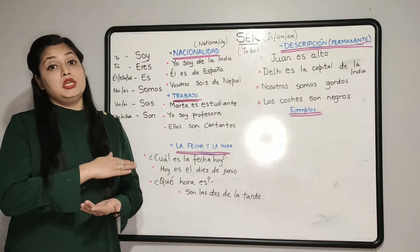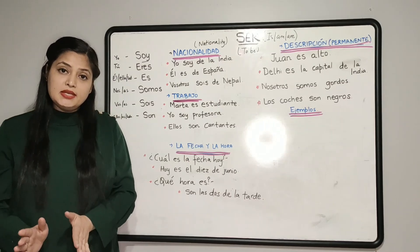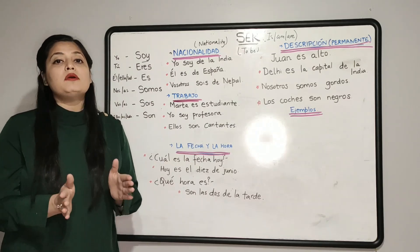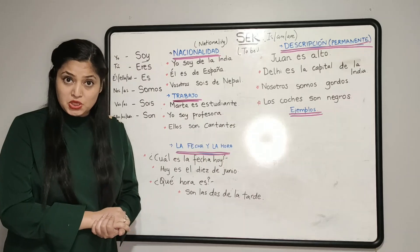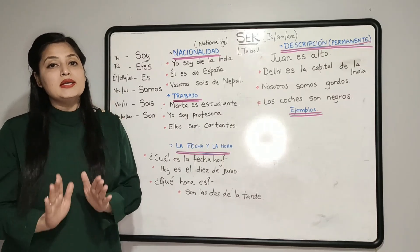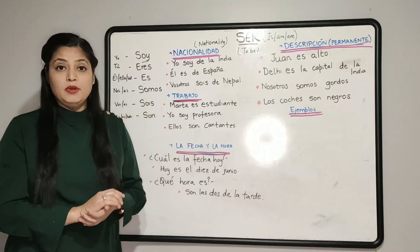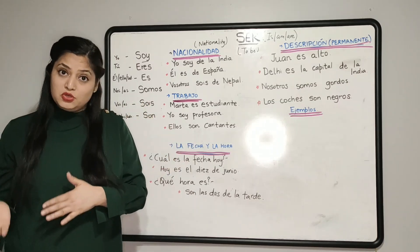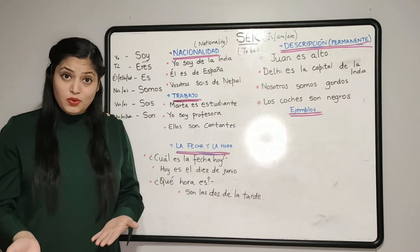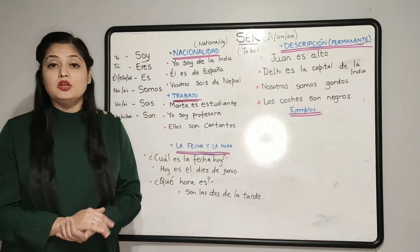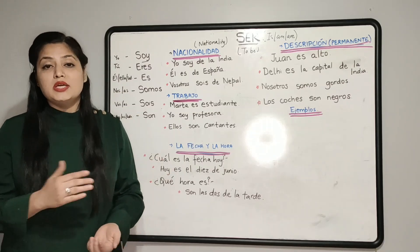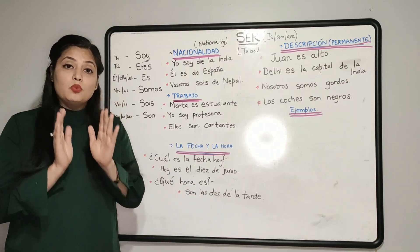so if a verb follows the pattern of conjugation in all the six subjects, we consider it a regular verb. But if a verb deviates from that given pattern of conjugation — even if it deviates in just one subject — we consider it an irregular verb. So a regular verb follows the pattern in all six subjects, and an irregular verb is the one which deviates from that conjugation pattern even in one or more subjects.